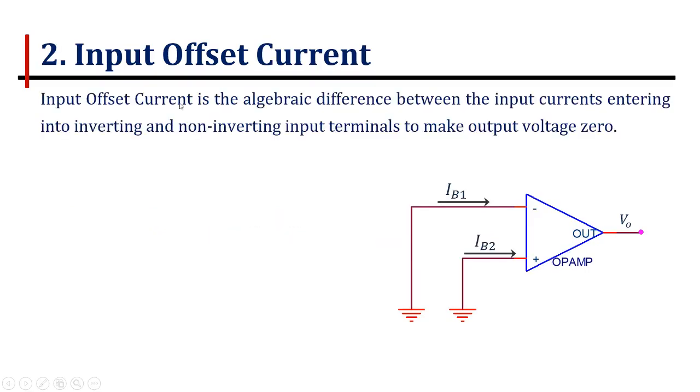The input offset current is the algebraic difference of the input currents entering into inverting and non-inverting input terminals to make output voltage zero. If IB1 and IB2 are two input currents, then input offset current is the difference of IB1 and IB2. The typical value of the input offset current is 5 nanoamps.